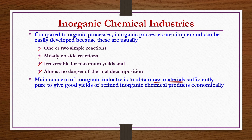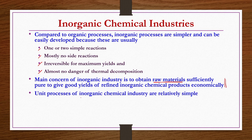If so many advantages exist for inorganic chemical industries compared to organic processes, why is inorganic industry not dominating overall? The main problem is getting raw materials. Most of the raw materials required for the majority of inorganic chemical production in India are imported from other countries. Unit processes of inorganic chemical industry are relatively simple — for example, neutralization, calcination, sulfonation, and nitration occur in simple reactors.